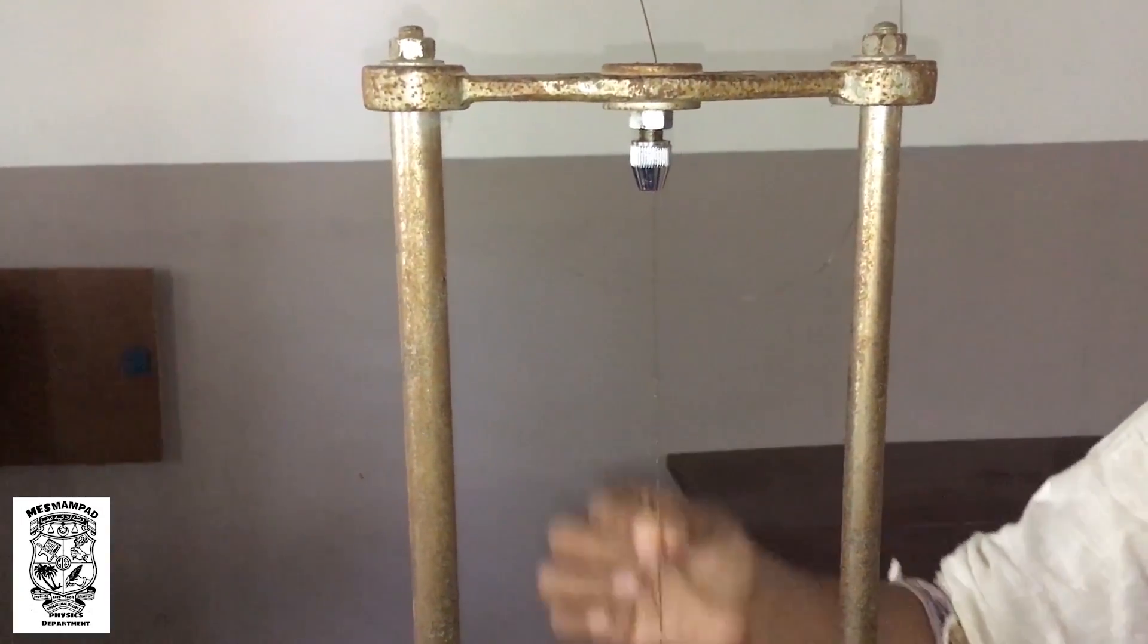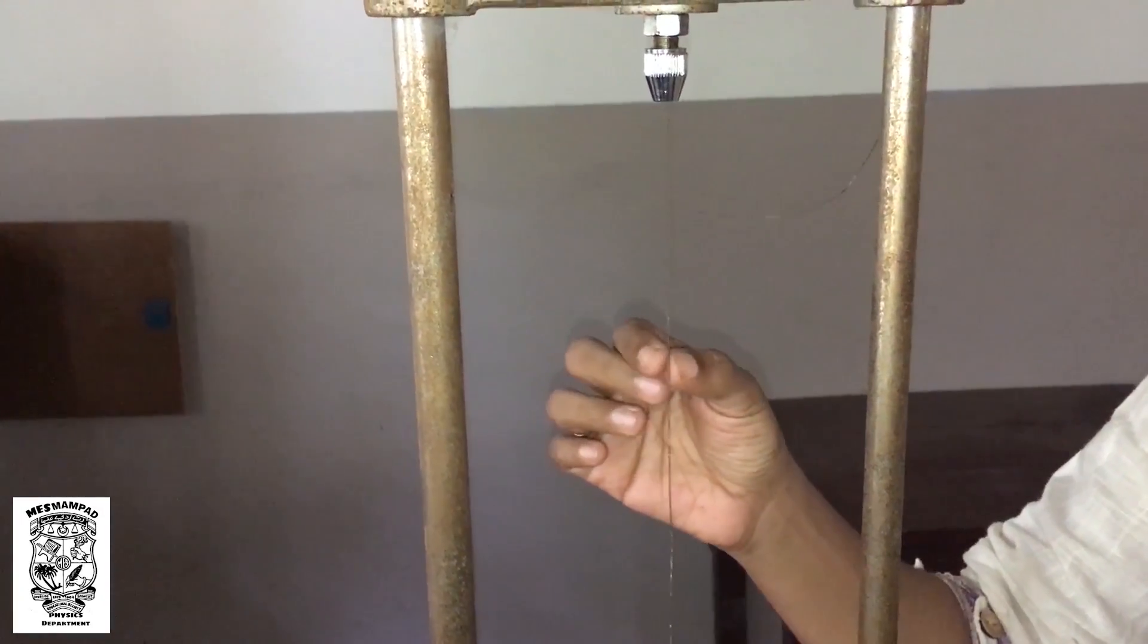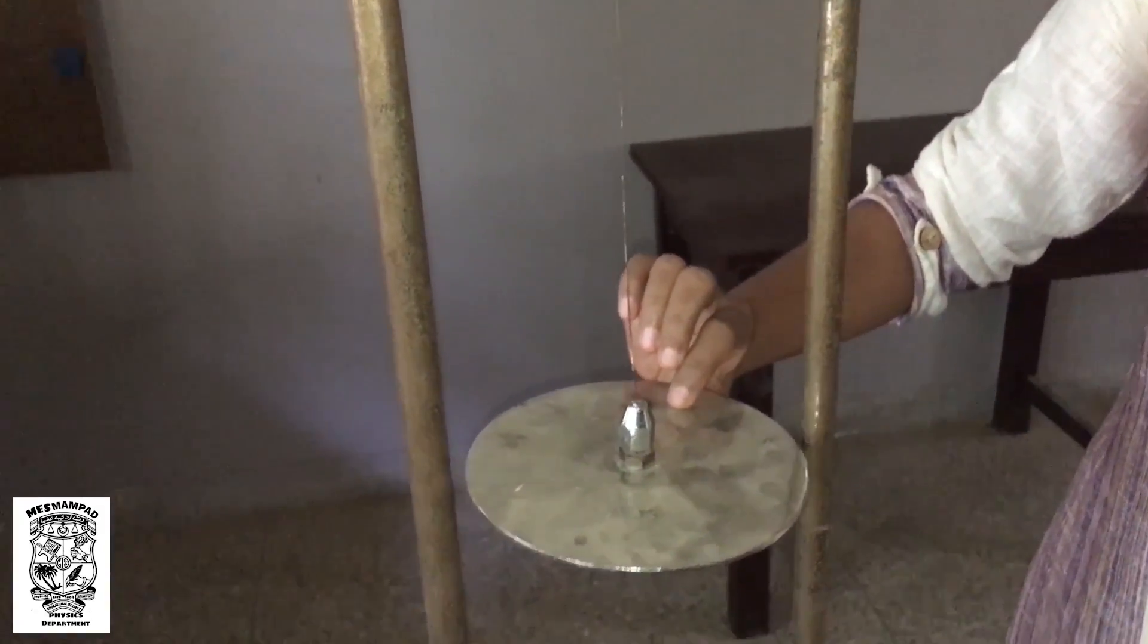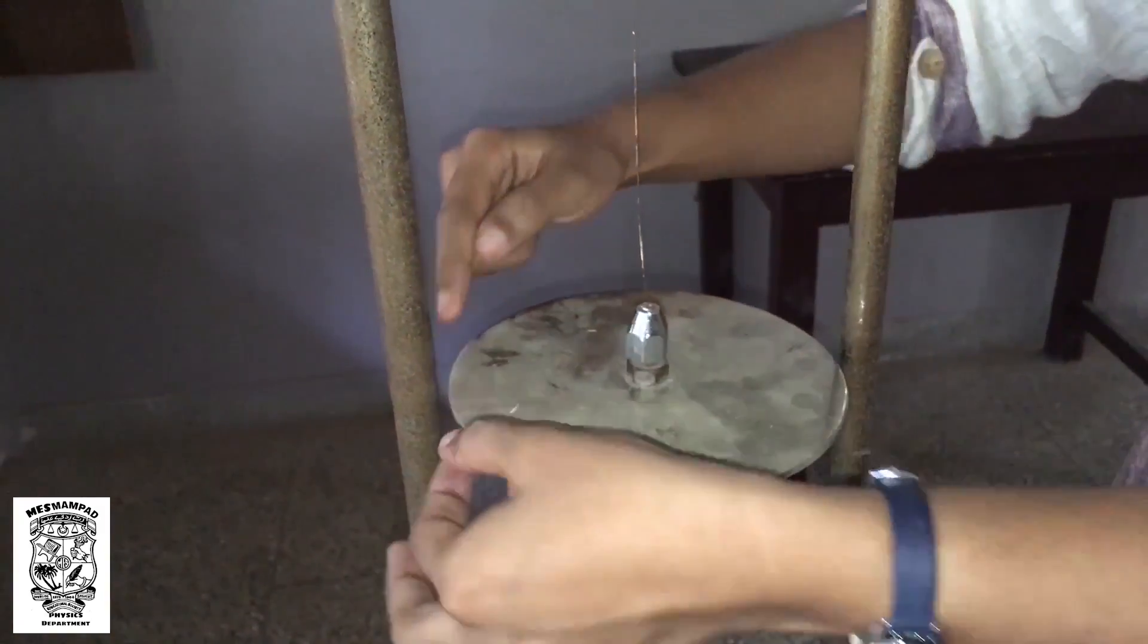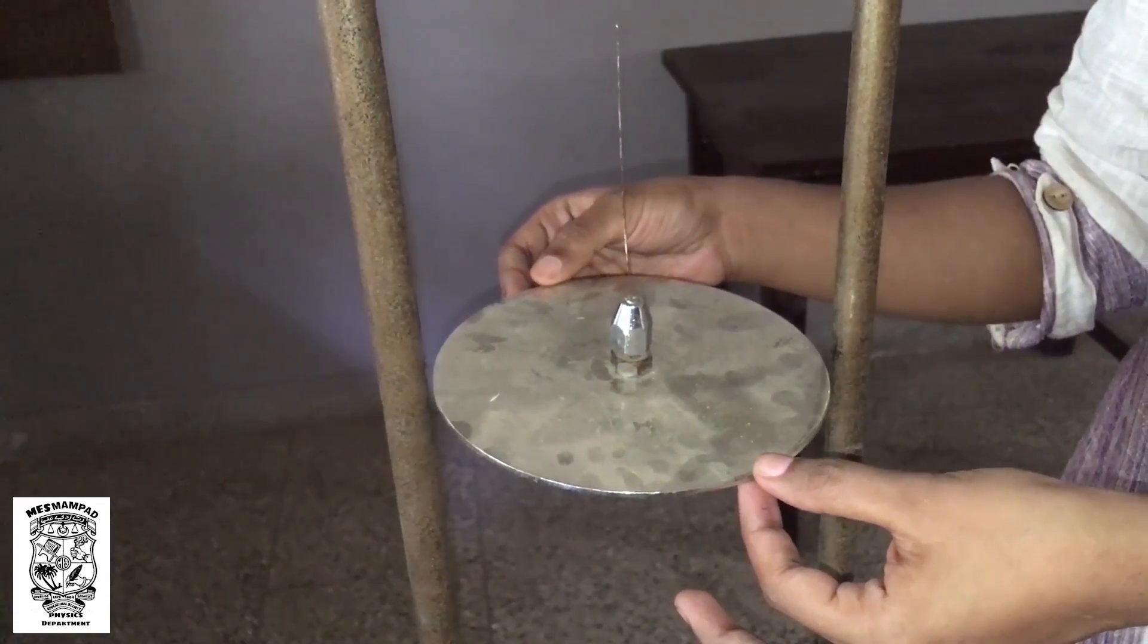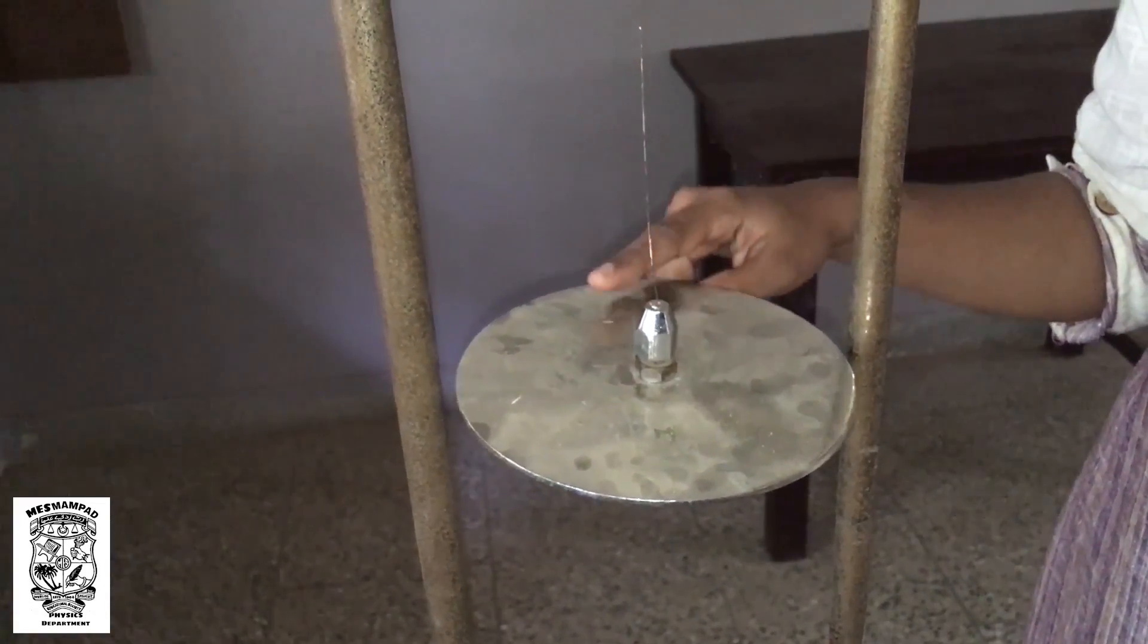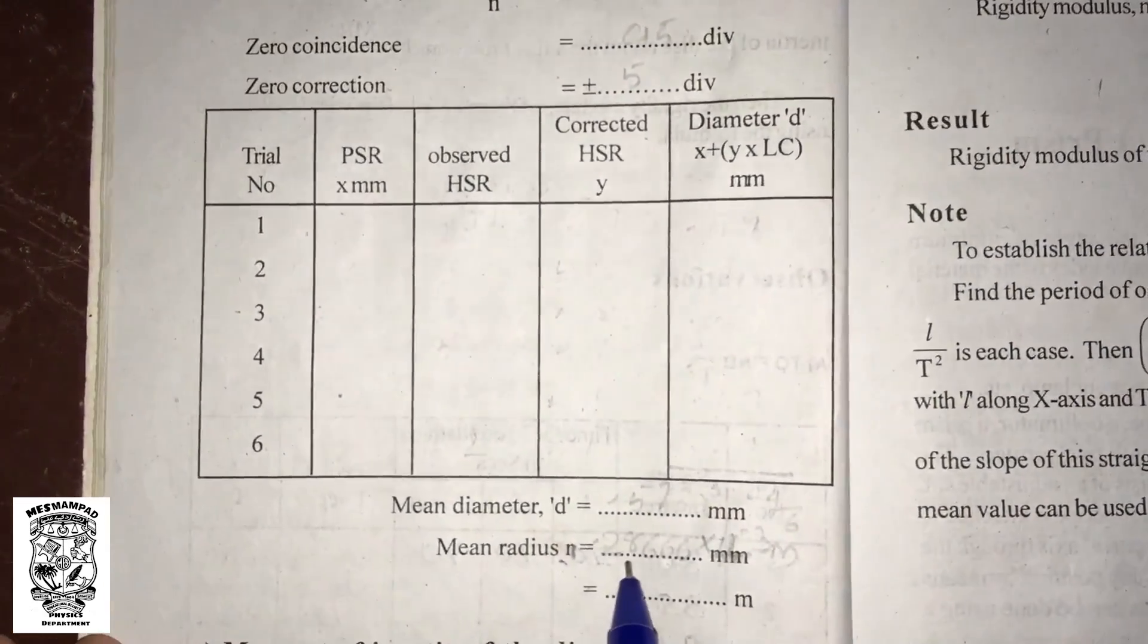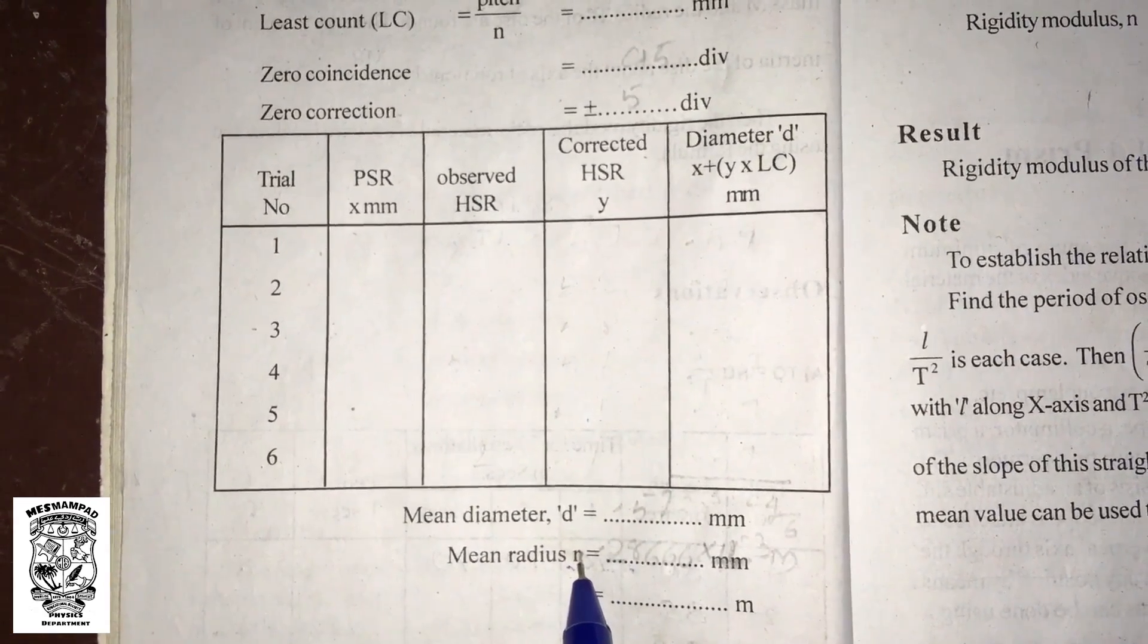Using a screw gauge, we have to measure the radius of the metal disc. The perimeter is 2 pi r, so we can calculate the radius of the metal disc, and it is small r.